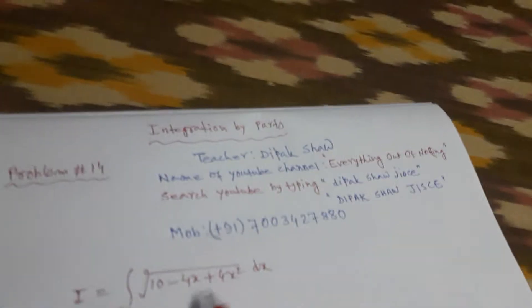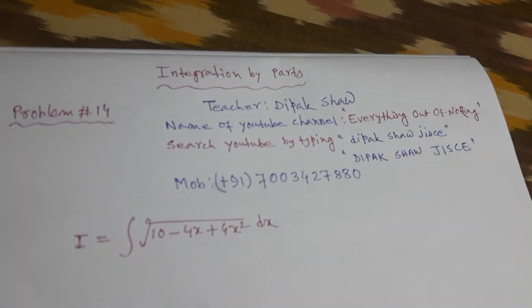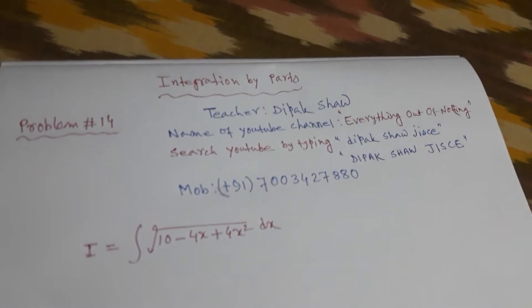This is problem number 14 from the chapter of integration by parts. The problem is the integration of √(10 - 4x + 4x²) dx.